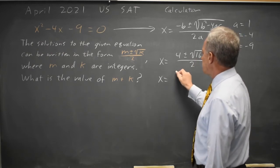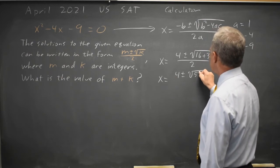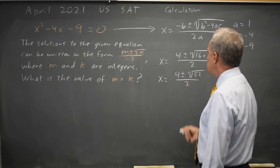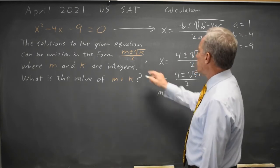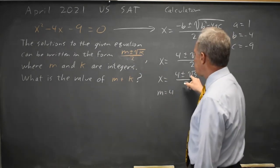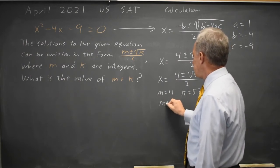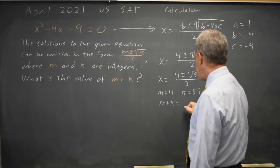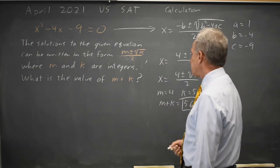So x equals 4 plus or minus the square root of 52 over 2. m equals 4 because this is m plus or minus the root of k, and k equals 52. m plus k equals 52 plus 4 is 56, and that is what they are asking for.